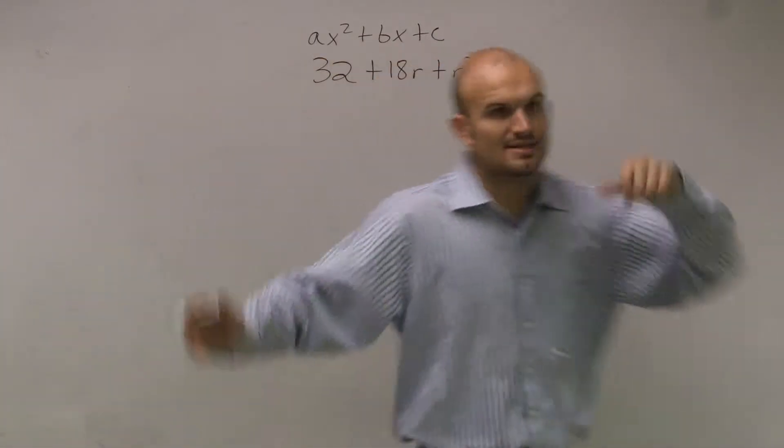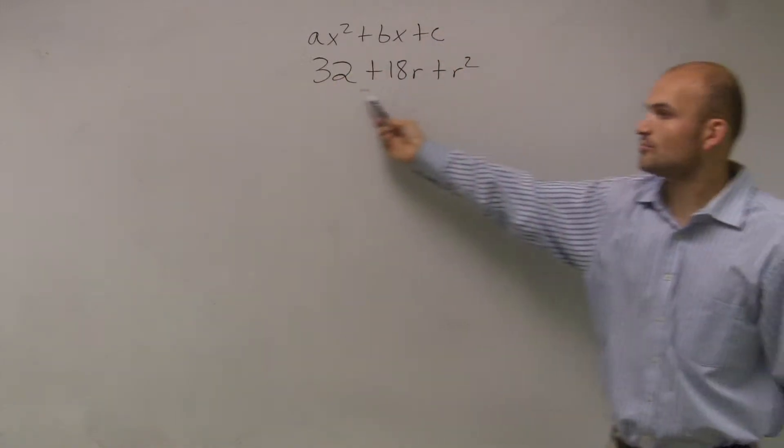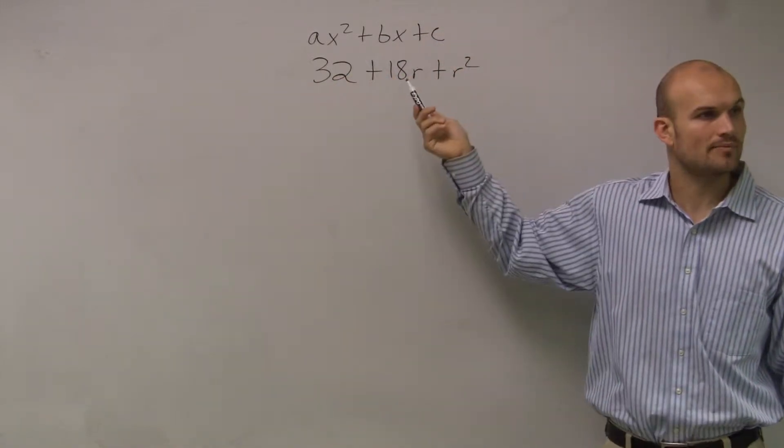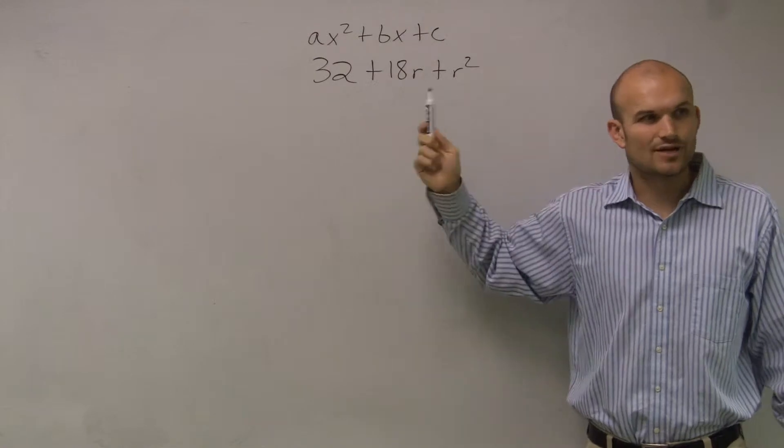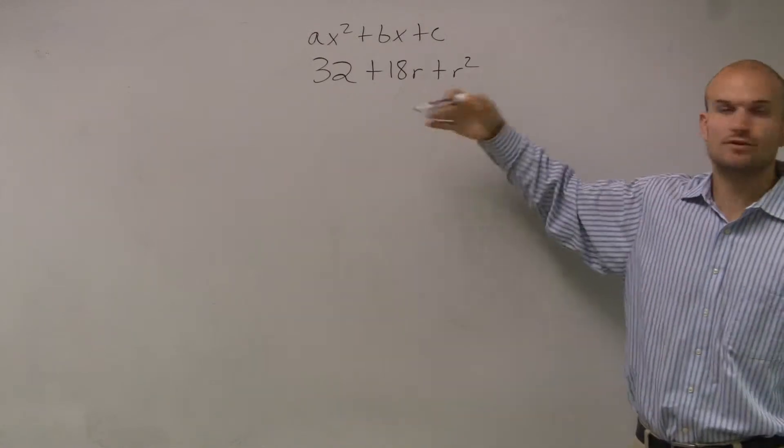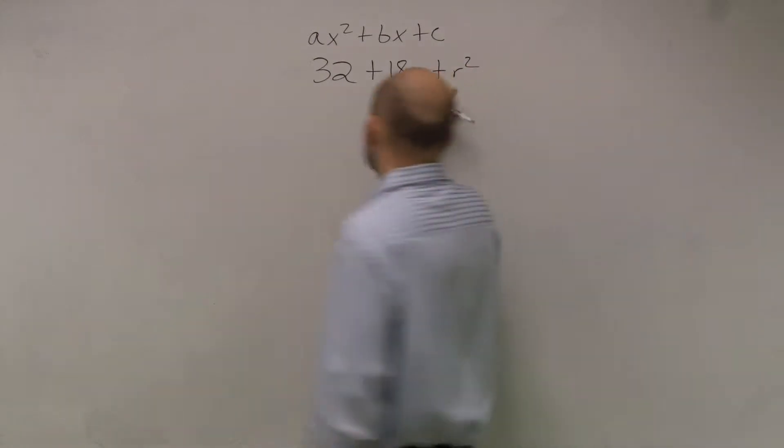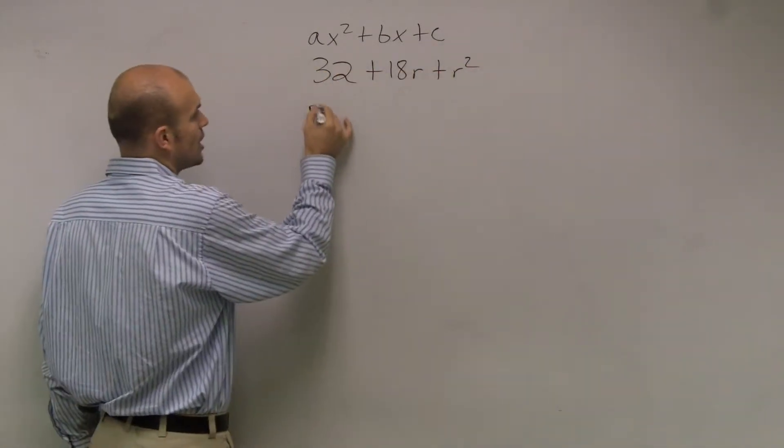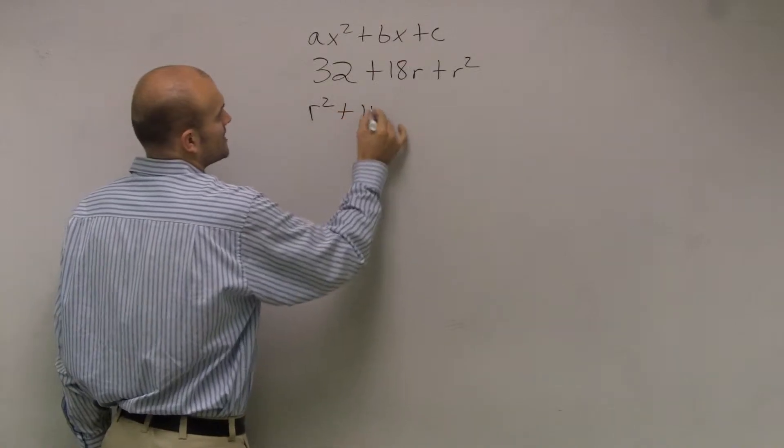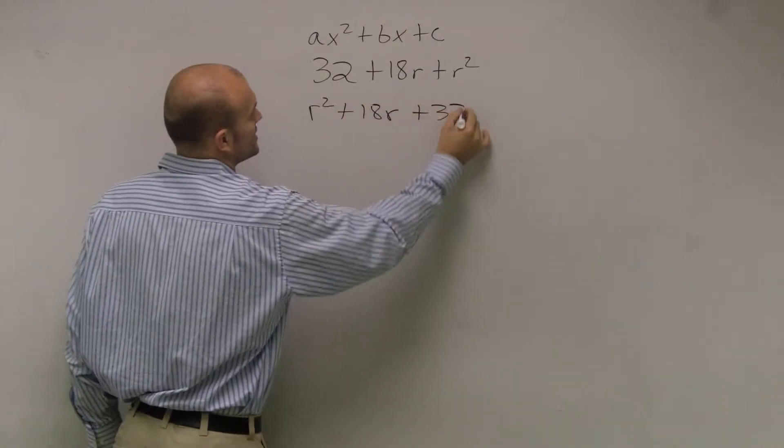Now the problem we have with this is our problem is not in that form. So it's not in standard form. Remember, standard form is when you have your largest degree first and then you go in descending order of exponents. So what I'm going to do to solve this problem is just rewrite it as r squared plus 18r plus 32.